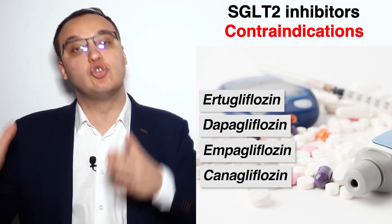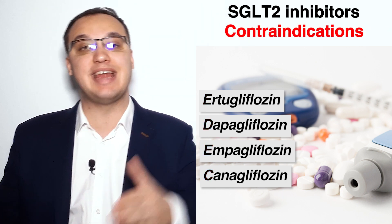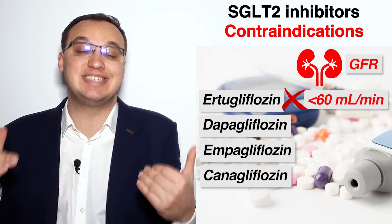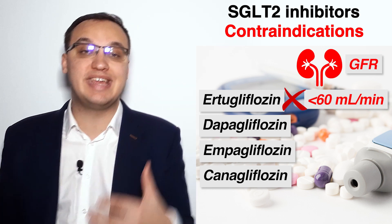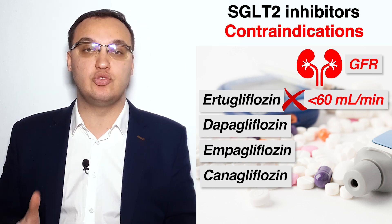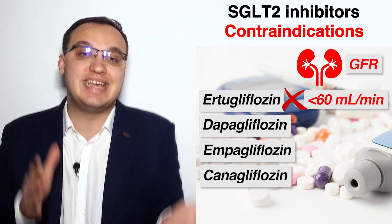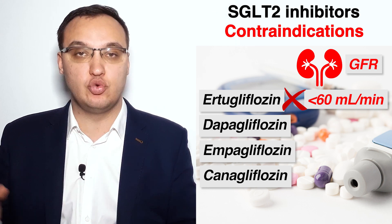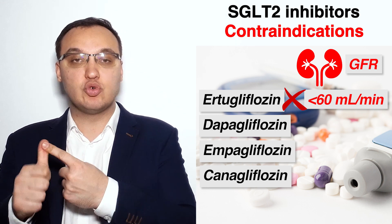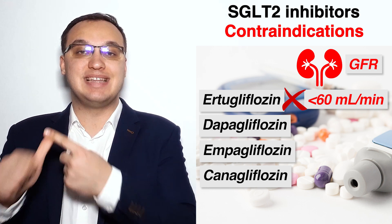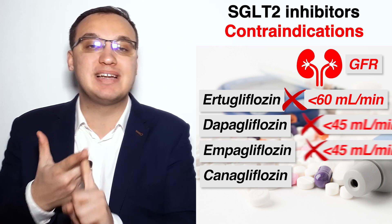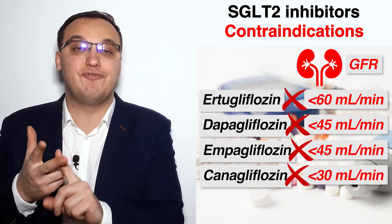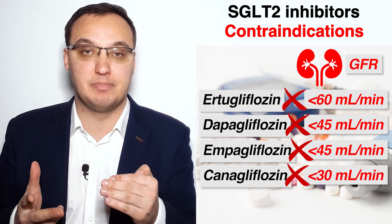Ertugliflozin cannot be used by patients having a GFR of less than 60 ml per minute. So one contraindication against SGLT2 inhibitors is kidney insufficiency, and it depends on which type we are talking about. Ertugliflozin: less than 60 ml per minute; dapagliflozin and empagliflozin: less than 45 ml per minute; canagliflozin: less than 30 ml per minute.